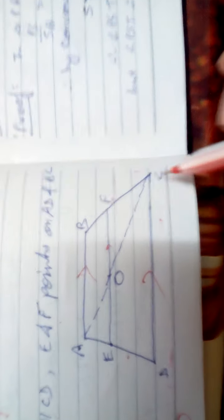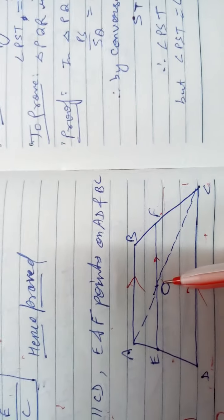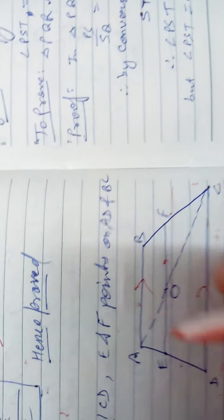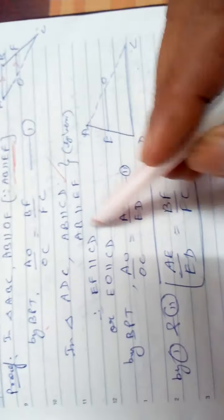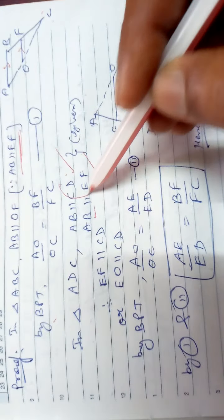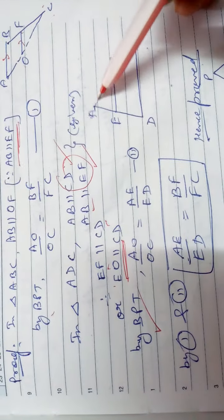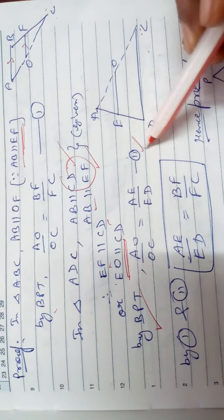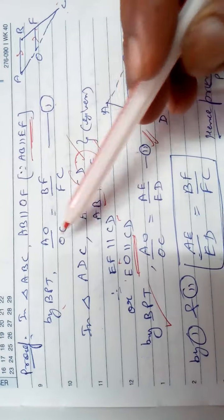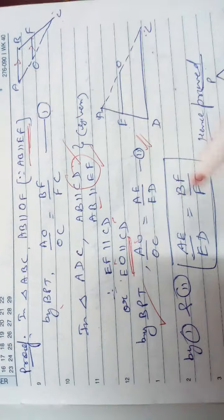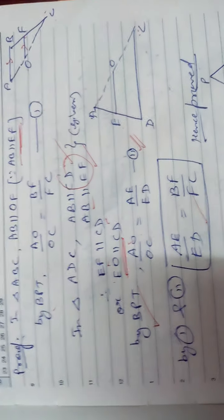Now consider triangle ADC. Since AB is parallel to CD and AB is parallel to EF, CD is also parallel to EF, so OE is parallel to CD. Applying BPT in triangle ADC: AO/OC = AE/ED. This is equation 2. Since the LHS of both equations are equal, the RHS are also equal: AE/ED = BF/FC. Hence proved.